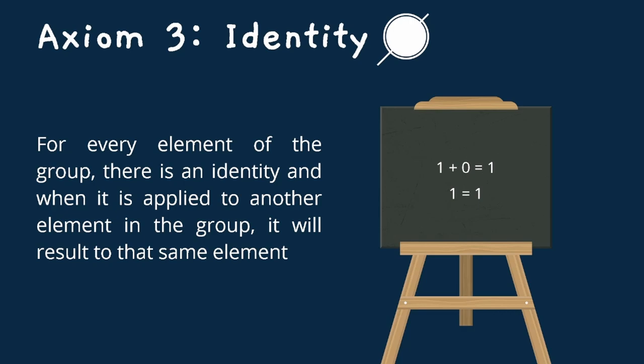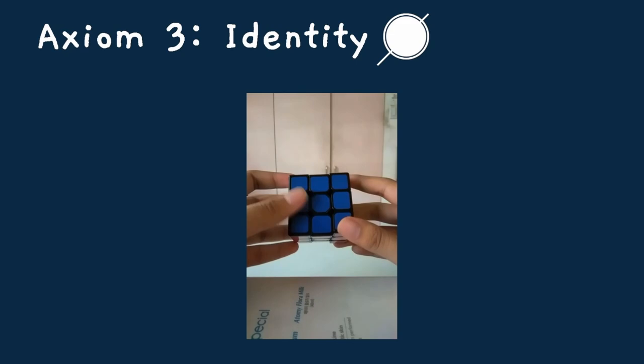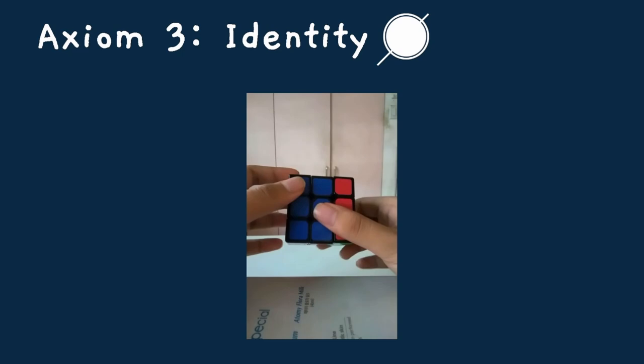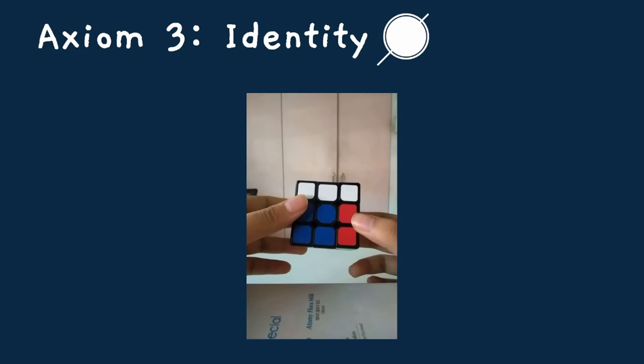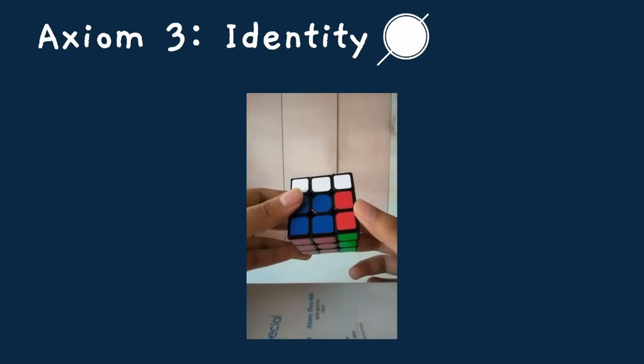Axiom 3, identity, states that for every element of the group, there is an identity, and when applied to another element, it still produces that same element. For example, we have 1 plus 0 equals 1. When we add 0 to 1 or any number, it produces that same element, which in this case is 1. Zero in this axiom is basically doing nothing to the element. With the use of a Rubik's cube, if we try to rotate some parts of the cube, then we proceed to do nothing, it is still the same position unless I try to rotate the cube again. That is the identity axiom.